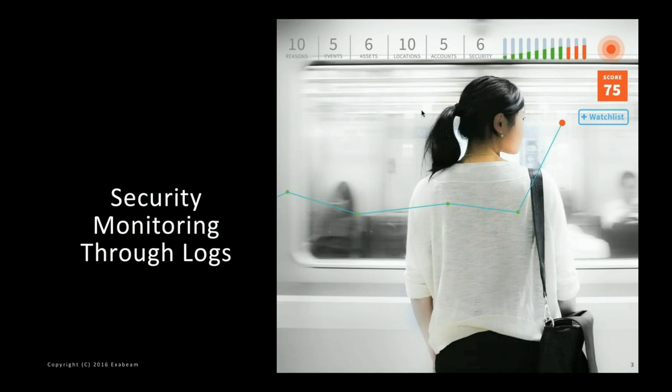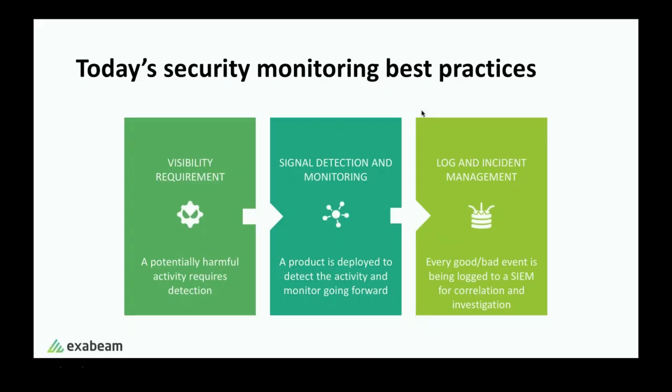Today, we're going to go through essentially how to use all of the signals that we have in our enterprise in order to capture insider threats or better improve our ability to detect insider threats and other threats that are imminent on our networks. To do that, I want to go through some baseline of how currently the best practice is to capture signals on the network.